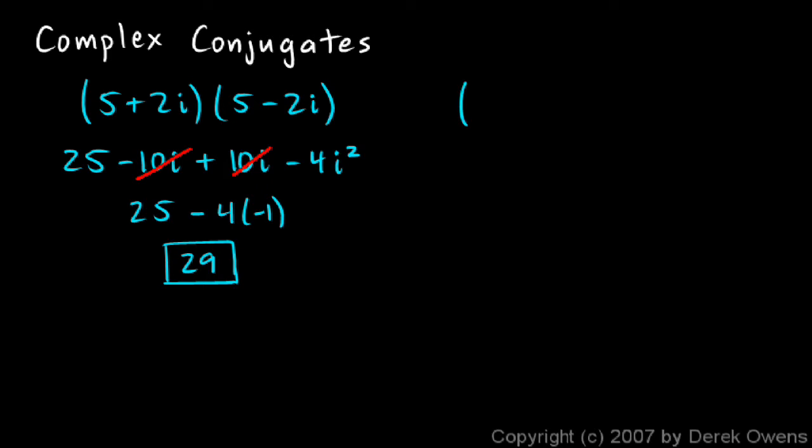Okay, let's do another example. 7 plus 3i times 7 minus 3i. The same thing is going to happen in this case. Let's do first, outer, inner, last.